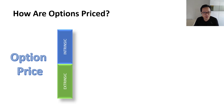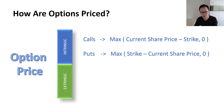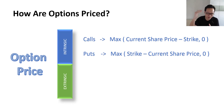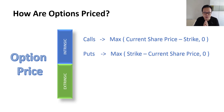How are options priced? Option pricing is somewhat complicated because it's influenced by various factors, but broadly it comprises two components: intrinsic value and extrinsic value. Intrinsic value is the difference between the share price and the strike price — essentially what you get out of the option when you exercise it. You only exercise when it makes sense: for a call, the share price should be above the strike; for a put, below the strike. Otherwise the intrinsic value of the option is zero.